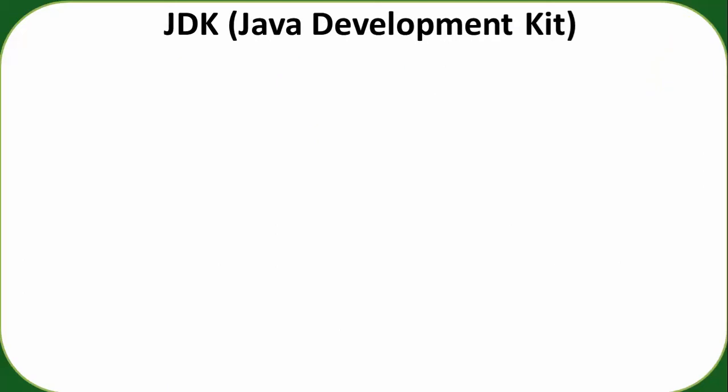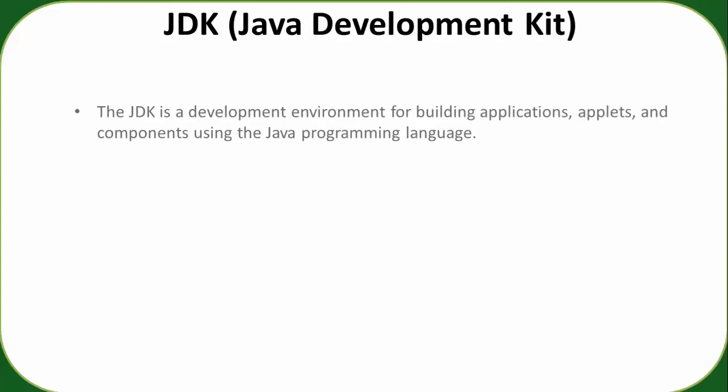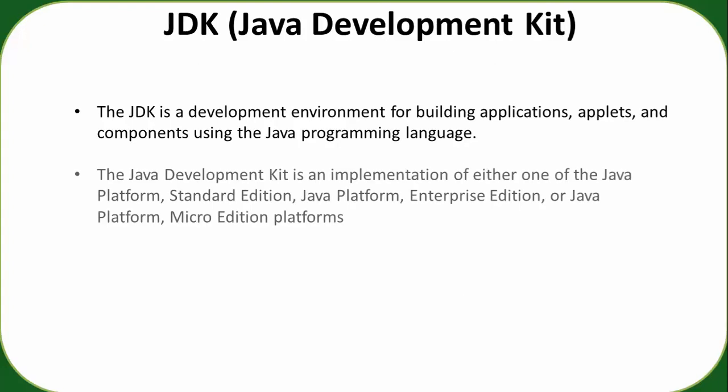To write Java code, we need the Java Development Kit (JDK). The JDK is a development environment for building applications, applets, and components using the Java programming language. You can download it from Oracle's website, which is the owner of Java. For any kind of Java programming — applications, applets — you need the JDK, which is available for Windows, Linux, or any operating system.